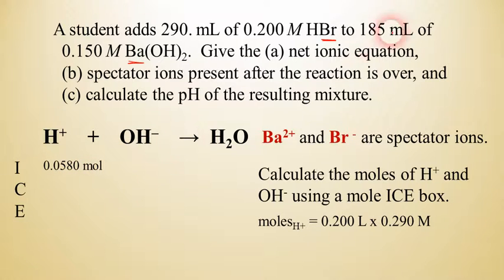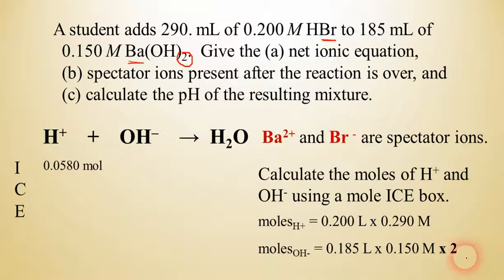It's a little bit different though this time because we have 0.185 liters times 0.15 molar, but we have two hydroxides. So it's a two to one ratio. So we actually have to take that and multiply it by two to find the moles of hydroxide that are here. So 0.185 liters times 0.15 molar times two would be about 0.0555 molar. And of course, we don't care about the water.